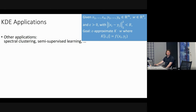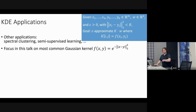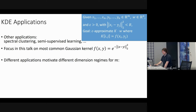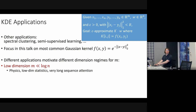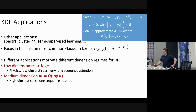There are even more applications like spectral clustering and semi-supervised learning. Different applications motivate different dimension regimes: in physics, m is really a constant like three; in low-dimensional statistics, m might also be constant; for very long attention sequences, m is also quite small. m being Θ(log n) is more common in high-dimensional statistics or modern machine learning like long-sequence attention.